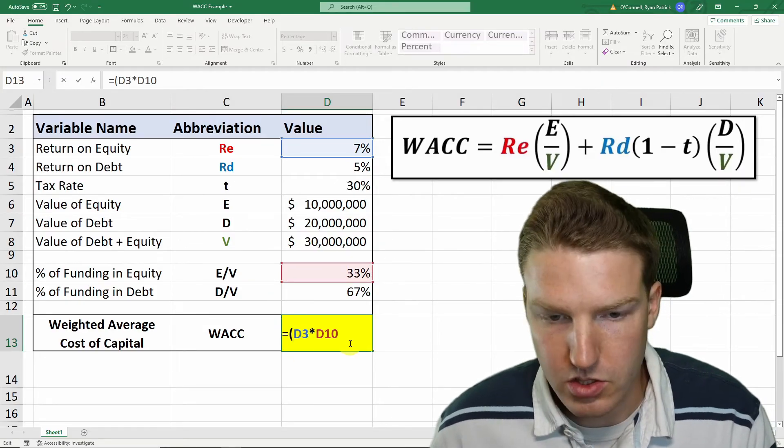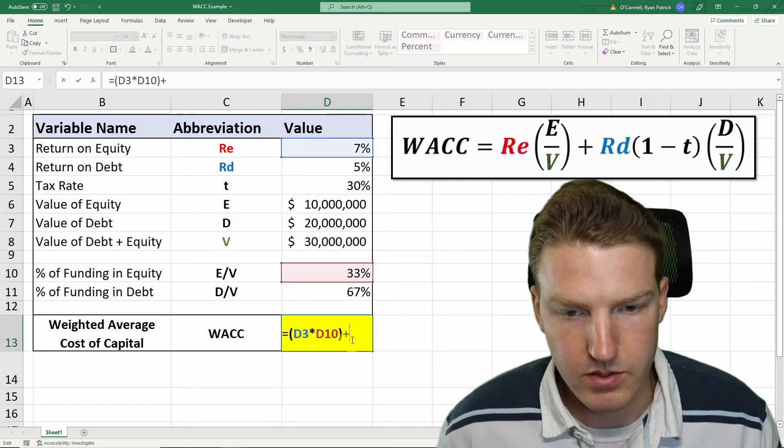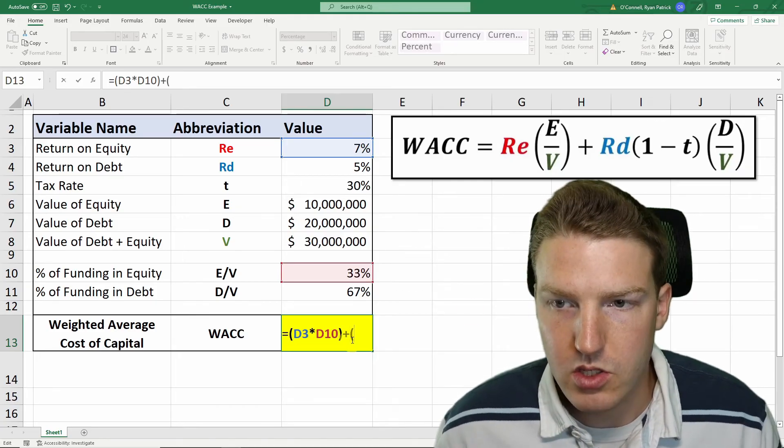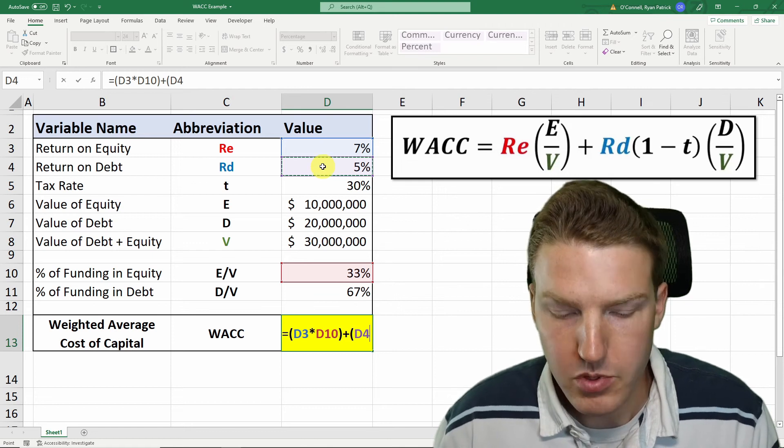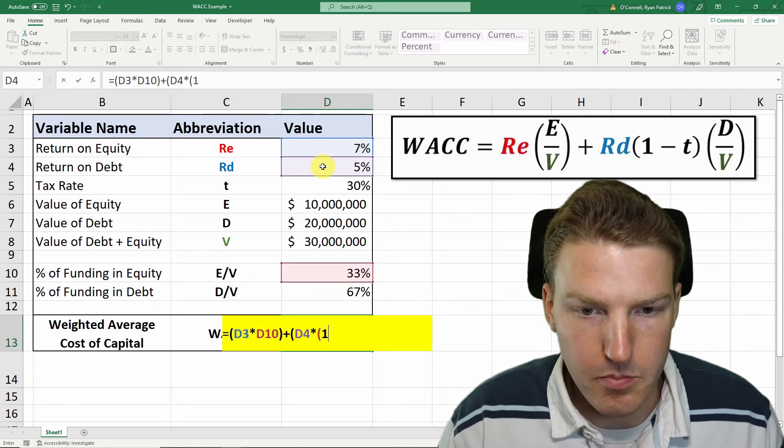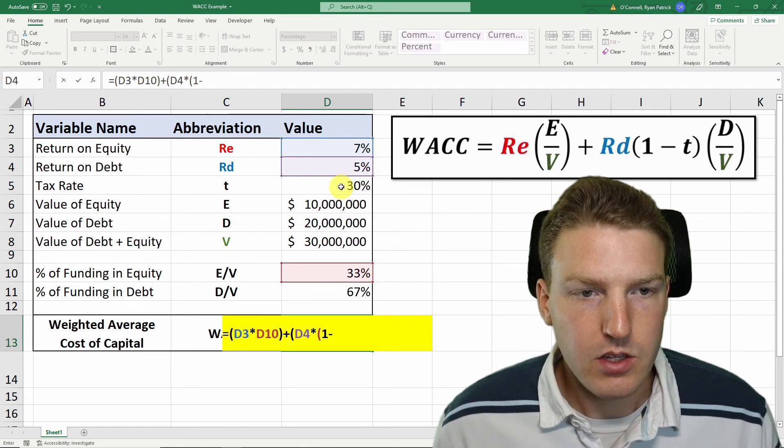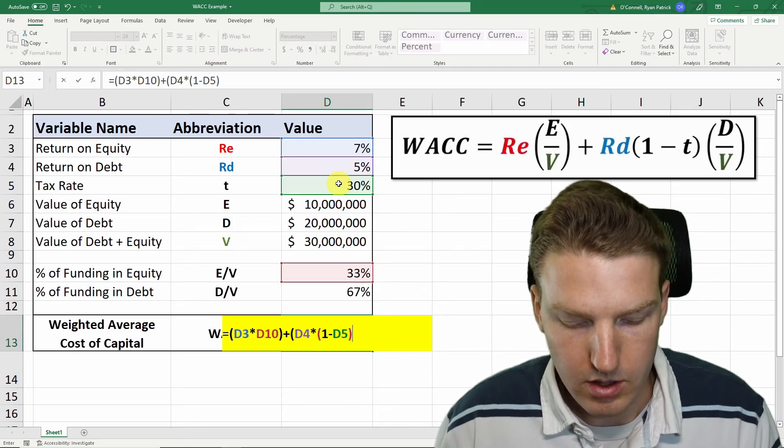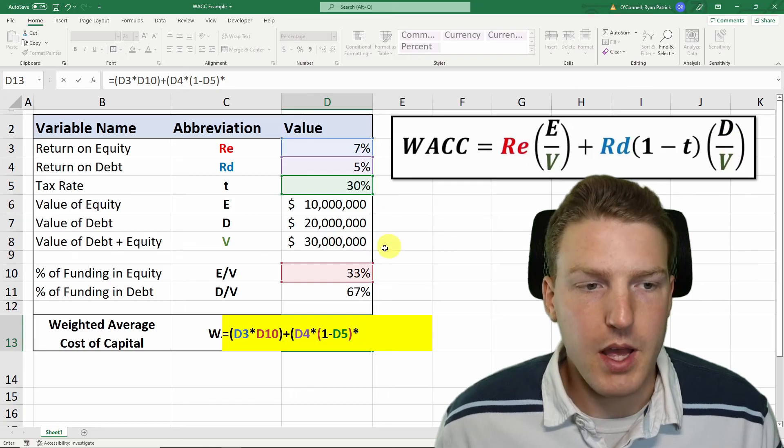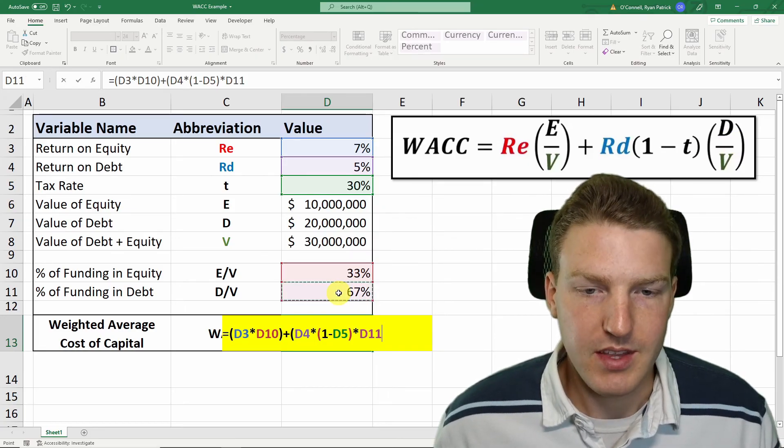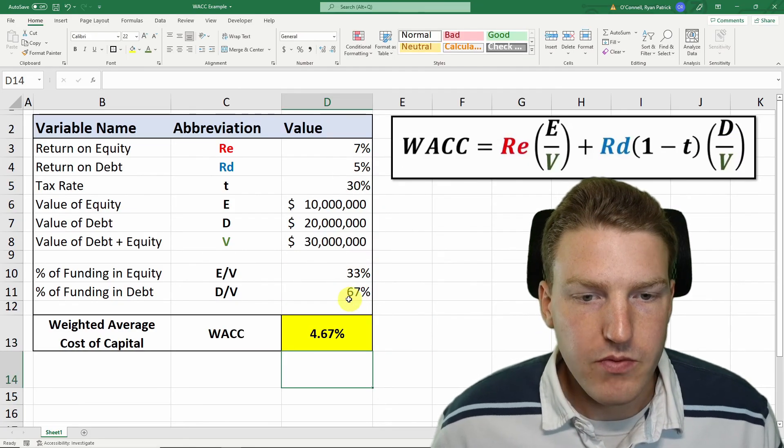That completely covers the equity side of this calculation. Now we need to do the debt side, which starts with the rate of return on debt of 5% multiplied by one minus the tax rate. You can see that this is lowering our cost of debt in this formula. Then we multiply it by the percent of funding that is in debt. And we find that our weighted average cost of capital is 4.67%.